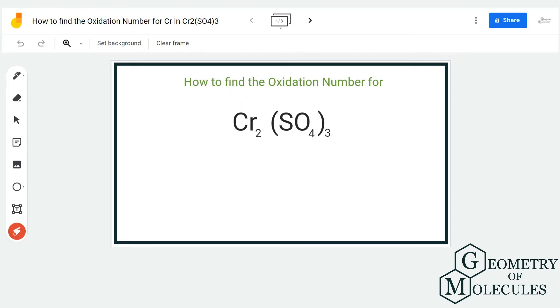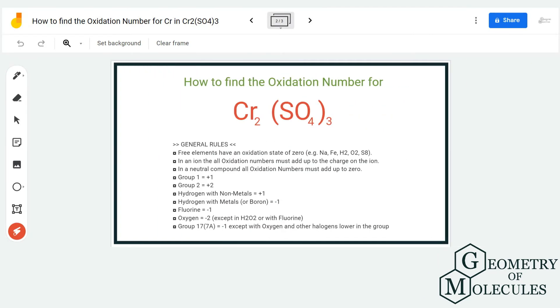The sum total of the charges of chromium and SO₄ is 0. This helps us understand what charges we can expect from Cr₂ and SO₄.